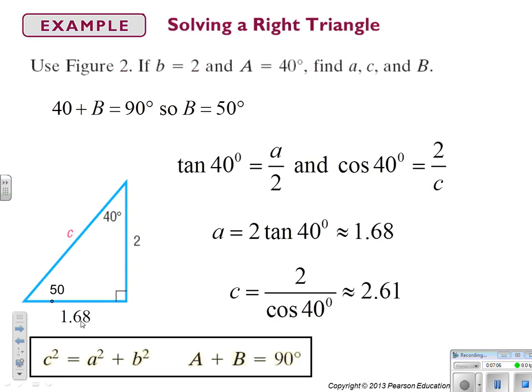And then C is, to find C, I would go adjacent over hypotenuse, which is cosine 40 degrees equals 2 over C. I cross-multiply. I get C times cosine 40 degrees equals 2, and I divide both sides by cosine 40. So that gives me 2 divided by cosine of 40. When I chug that into my calculator, it's 2.61, so I put that on my triangle. So now I have all sides and all angles. Triangle solved.